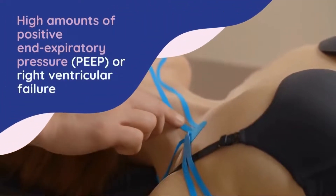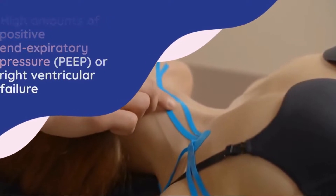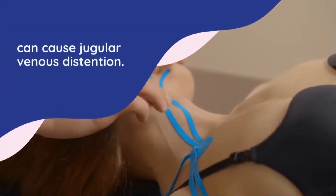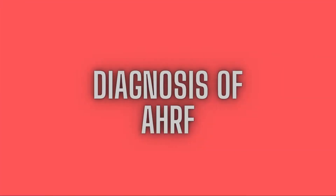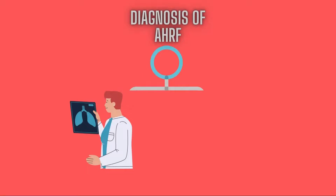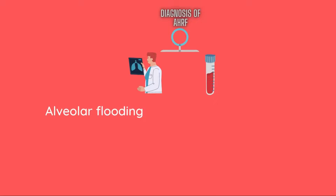High amounts of positive end-expiratory pressure (PEEP) or right ventricular failure may lead to jugular venous distension. To diagnose, you need two investigations: first, a chest X-ray, and second, an arterial blood gas. Pulse oximetry is mainly used to detect hypoxemia. While waiting for results, patients with low oxygen saturation should have a chest X-ray and ABGs performed and be treated with supplemental oxygen.